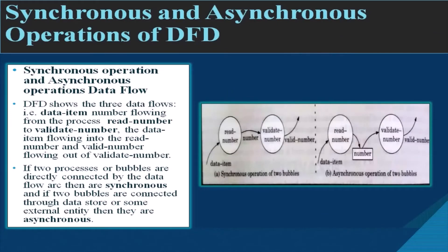There are two types of operations in DFD: synchronous and asynchronous. If two processes or bubbles are directly connected by a data flow, they are called synchronous operations. If two bubbles are connected through a data store or some external entity, they are called asynchronous operations. The first diagram shows a synchronous operation of two bubbles, and diagram B shows the asynchronous operation.